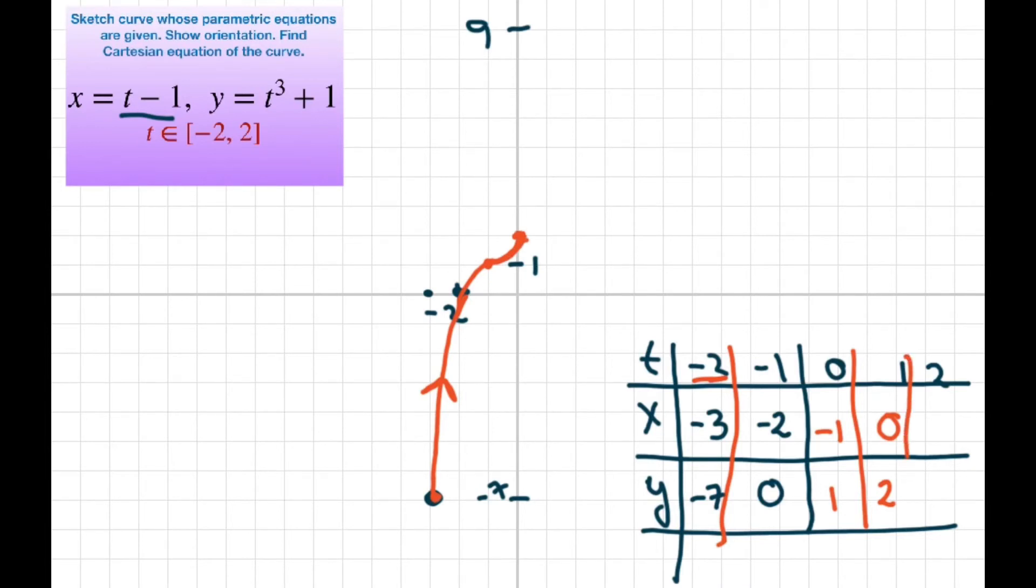And then at 2, we're going to get 1 comma 9. So there's your 1 and 9. So we swing up this way. Alright, so your orientation is like this.